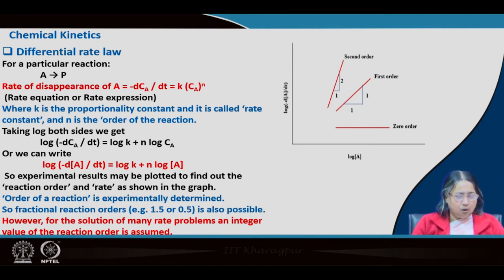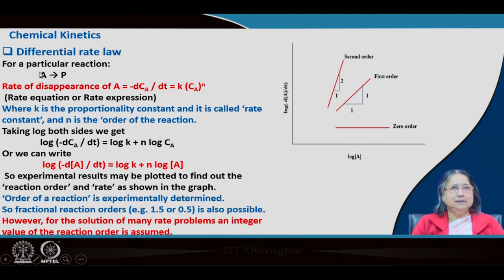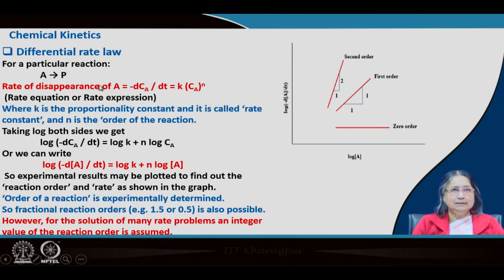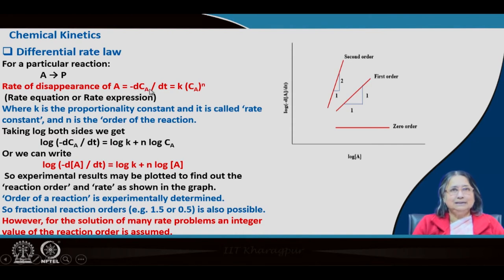Now, what is the order of the reaction? For the simple reaction A giving to P, the rate of disappearance of A is what we consider as the rate of the reaction. Because A is the reactant, a minus sign is applied: minus dCA/dt. This rate is related to concentration as rate = K · CA^N.